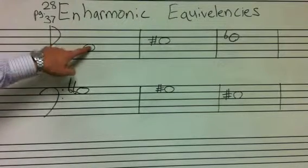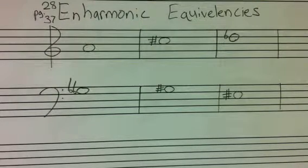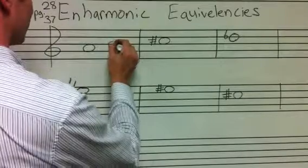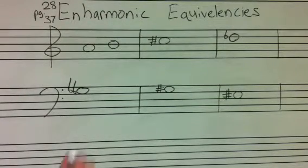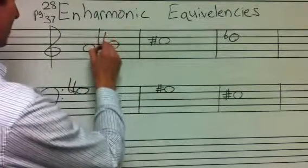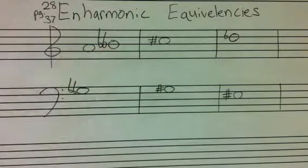For example, this is an A. I can make other notes on our keyboard or in music sound like A. What can I do to B to make it sound like A? I can double-flat it. If I double-flat B, that note will land on A. So it sounds just like A, but it's written as B double-flat.